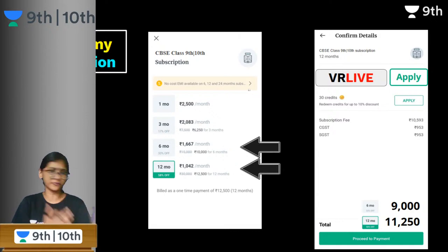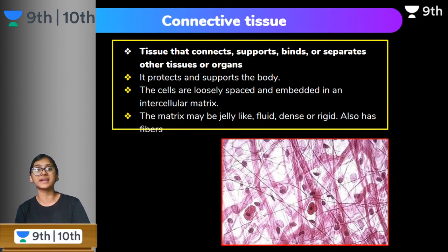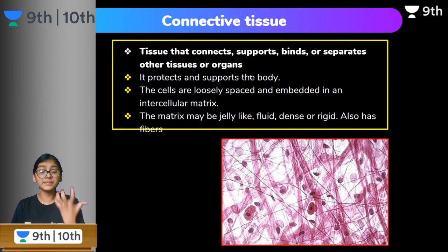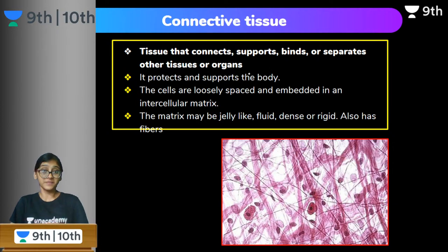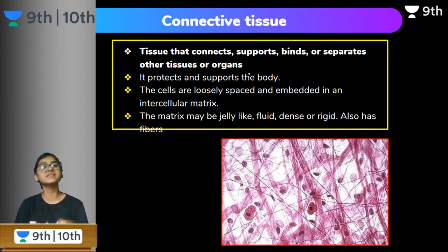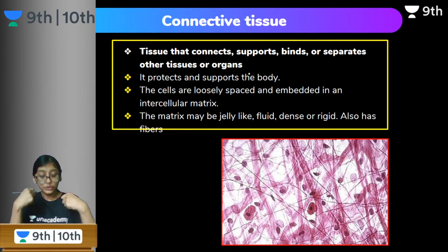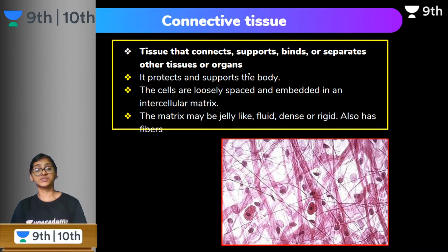There is also a separate subscription for CBSE 9th and 10th. Now let's jump into the concept — connective tissue. What is the meaning of connective tissue? What exactly is getting connected? In order to connect different organs or different tissues, there is a specialized tissue — not only in our body but also in other organisms — and it is referred to as connective tissue.